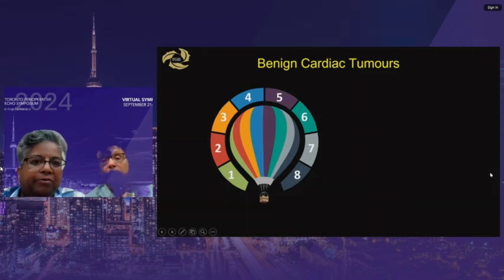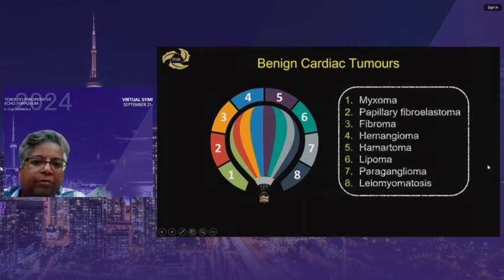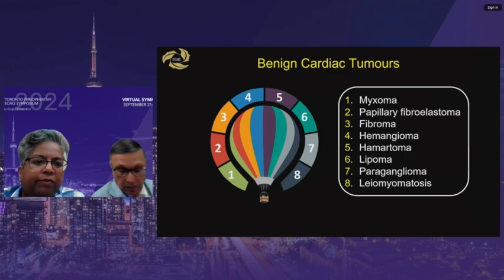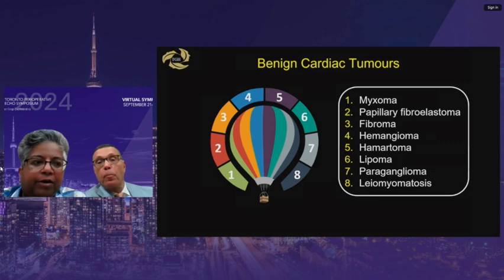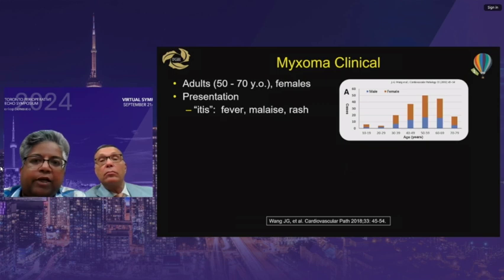We'll take you through a curated session of benign cardiac tumors — eight selected cases — looking at how patients present, their investigations before reaching the operating room, the echocardiographic appearance of the mass, what was done surgically to fix them, and post-op echos. The first pathology is myxomas — by far the most common tumor found in the heart.